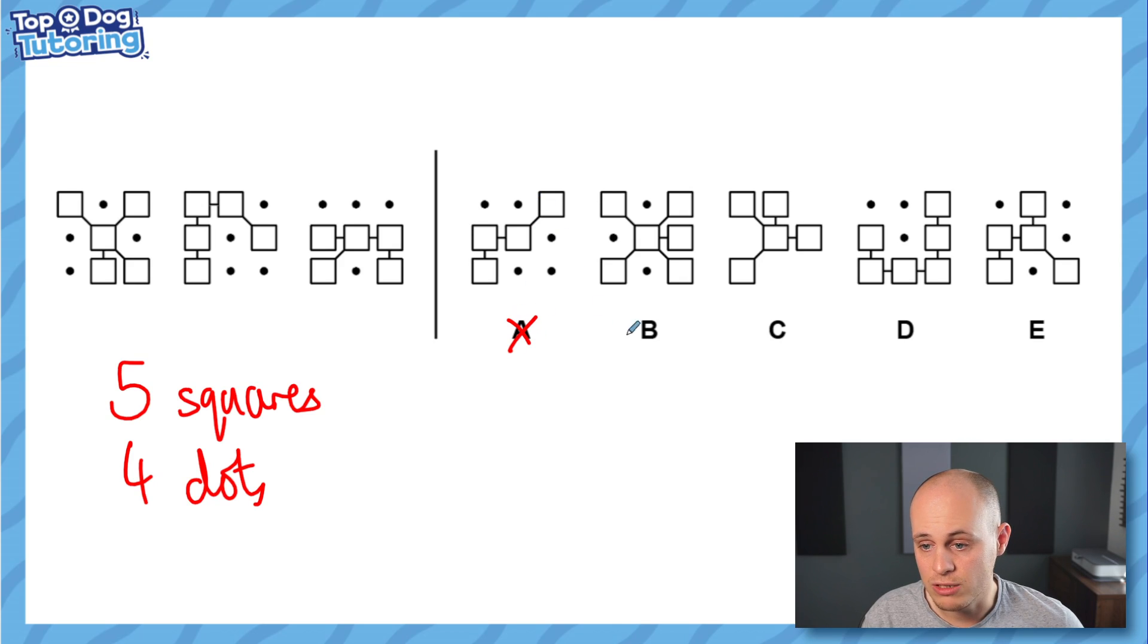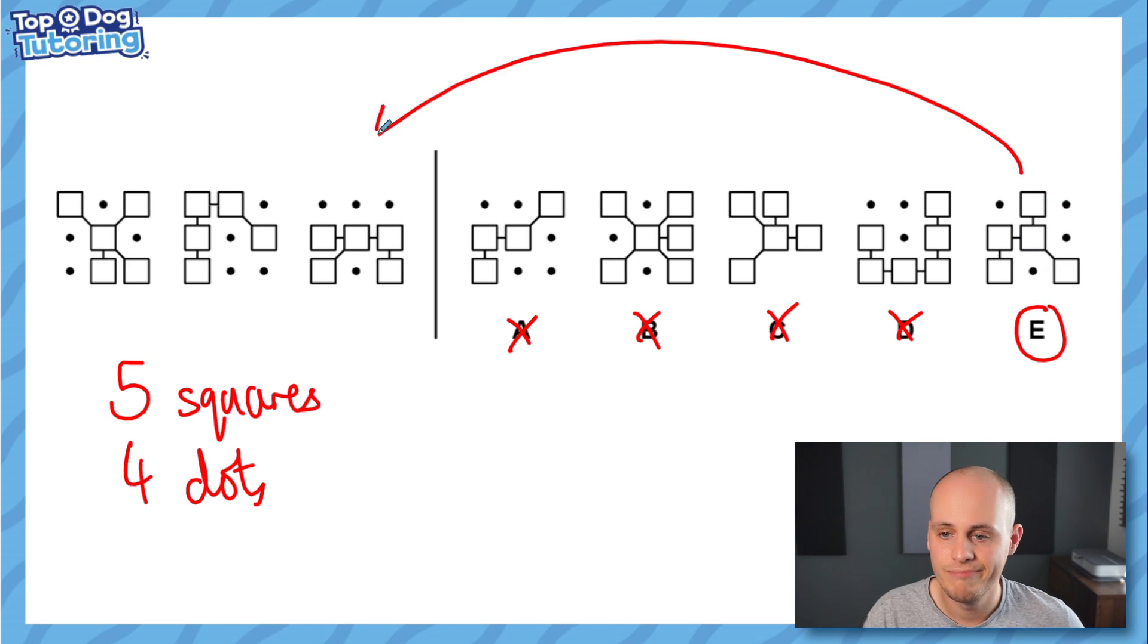A is not right it's got four squares B's got six squares C doesn't even have any dots that can't be right D's got six squares and E fits the bill perfectly it's got five squares and four dots E you can join the cool club we'll allow it.